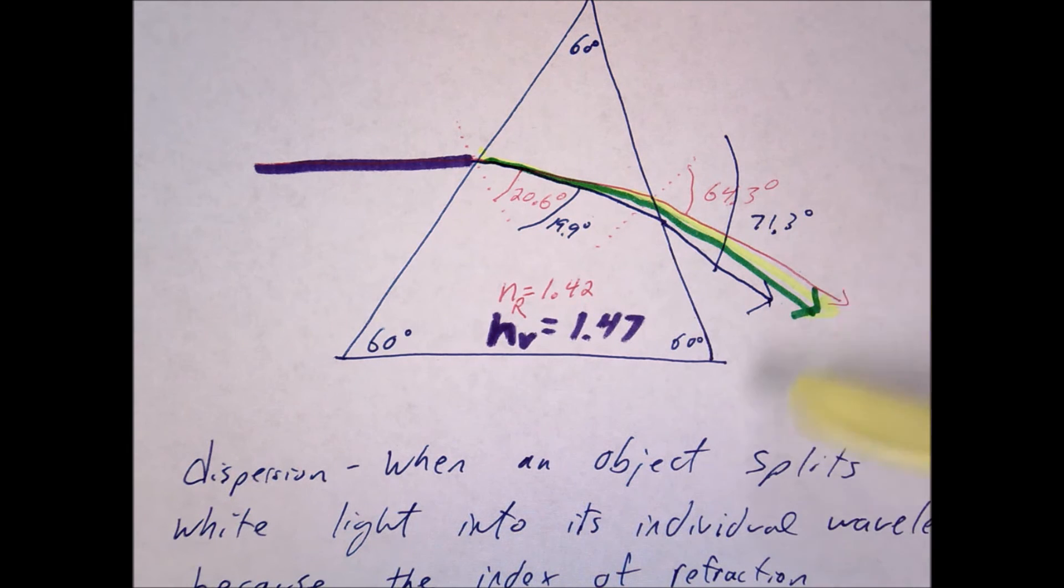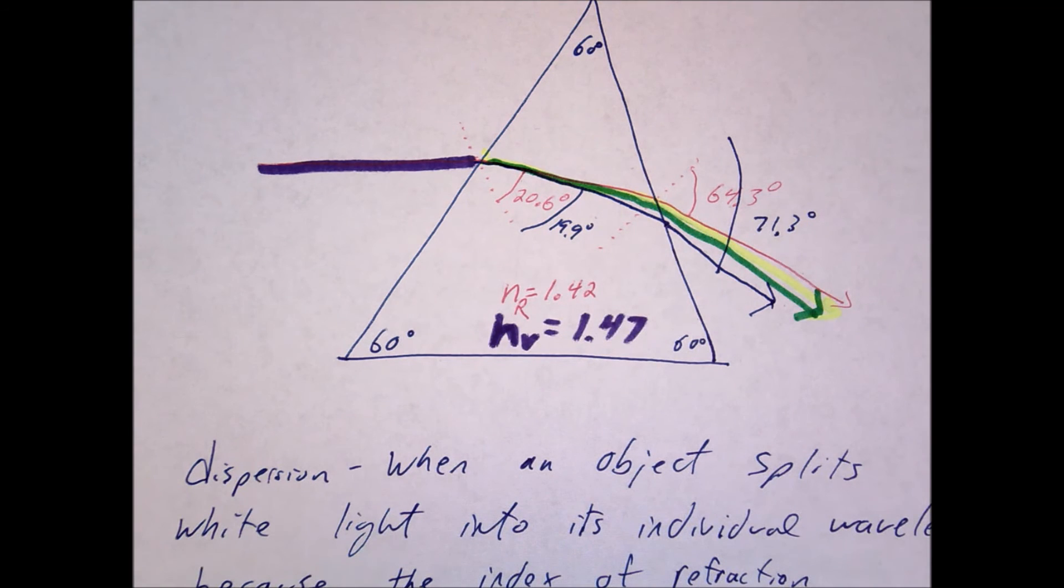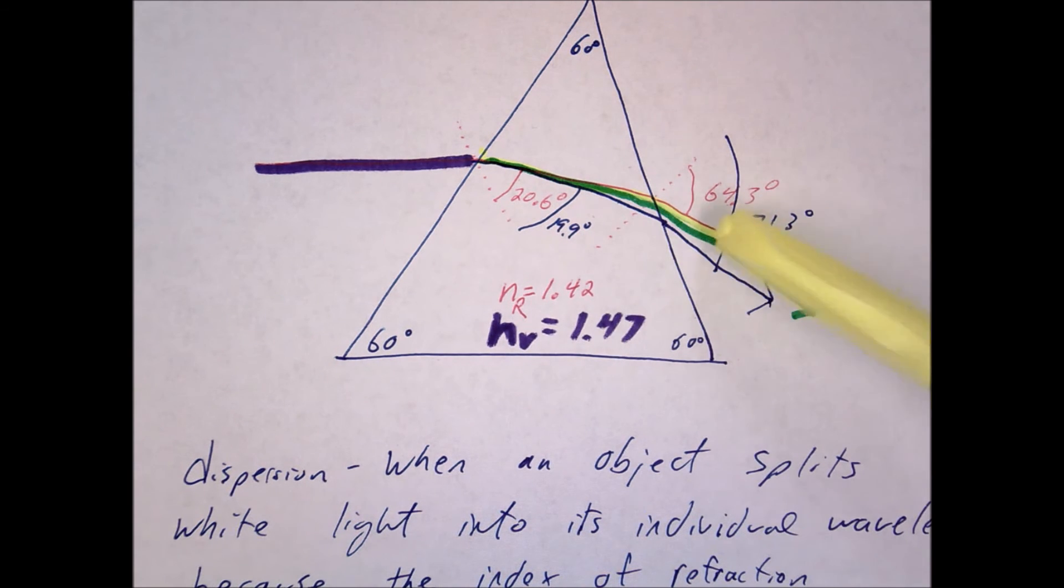All right, so this is the rainbow. Now this happens all the time. Anytime light goes through these substances, it's going to start to split it. However, notice that most of the time it's so small that your eyes don't recognize that change. But when you put it through something like a prism, you get a much more dramatic change on the second boundary. And now your eyes can see it and see the differences here.